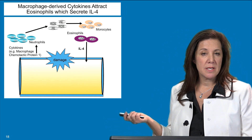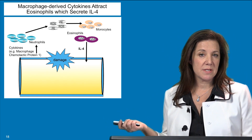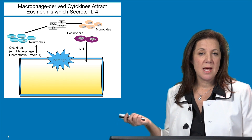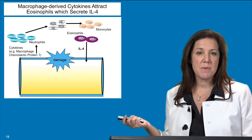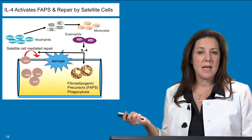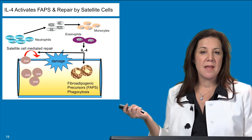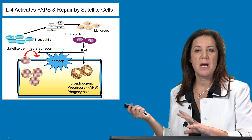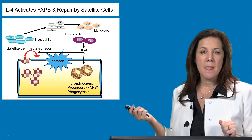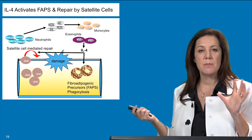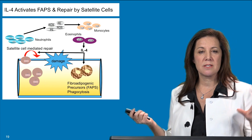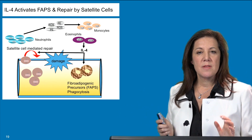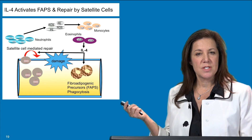Another cell type recruited to muscle is the eosinophil, another myeloid cell. Eosinophils secrete interleukin-4 (IL-4), which participates in muscle repair in two ways: first, it activates fibroadipogenic precursors (FAPs), which participate in phagocytosis and are necessary for muscle repair; second, IL-4 is very important for muscle cell fusion, as later stages of repair involve satellite cells fusing together to form myotubes.